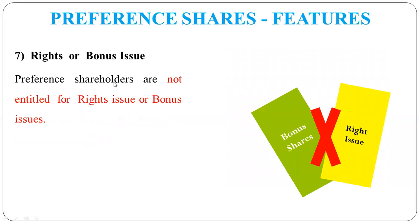One disadvantage of preference shares is that preference shareholders do not get right issue or bonus issue. As I explained in detail about equity shares, bonus issue is shares given as a free gift by the company, and right issue is when the company issues additional shares. Equity shareholders can receive both right issue and bonus issue, but preference shareholders cannot. This is a disadvantage or problem with preference shares — they do not get either of these two benefits.